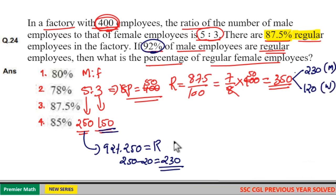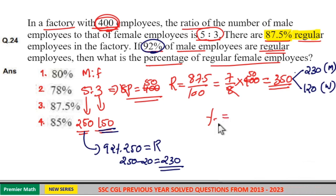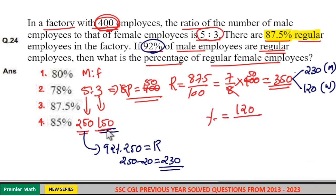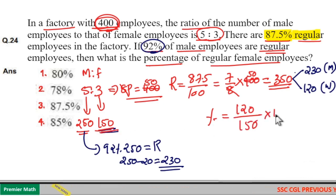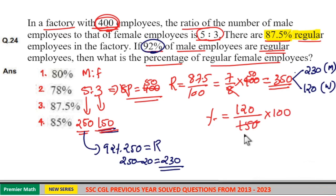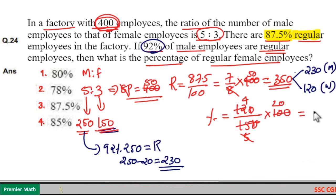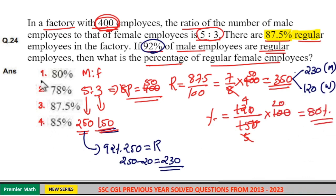Now we need the percentage of regular employees for women. Percentage = 120 out of 150 × 100. 3 goes 5 times into 15, and 3 goes 4 times into 12. 5 goes 20 times into 100, so 4 × 20 = 80%. So option 1 is the answer: 80% of female employees are regular.